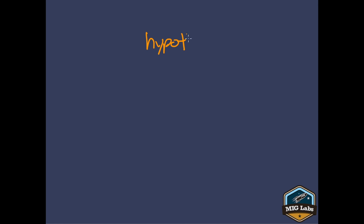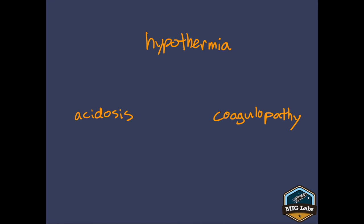There's even more bad news about the trauma triad of death. Each of these three factors can worsen the other factors. Hypothermia specifically can worsen coagulopathy, coagulopathy can worsen acidosis, and acidosis can worsen hypothermia. These three can feed each other, and when they do, the patient starts spiraling — getting worse and worse until they die.